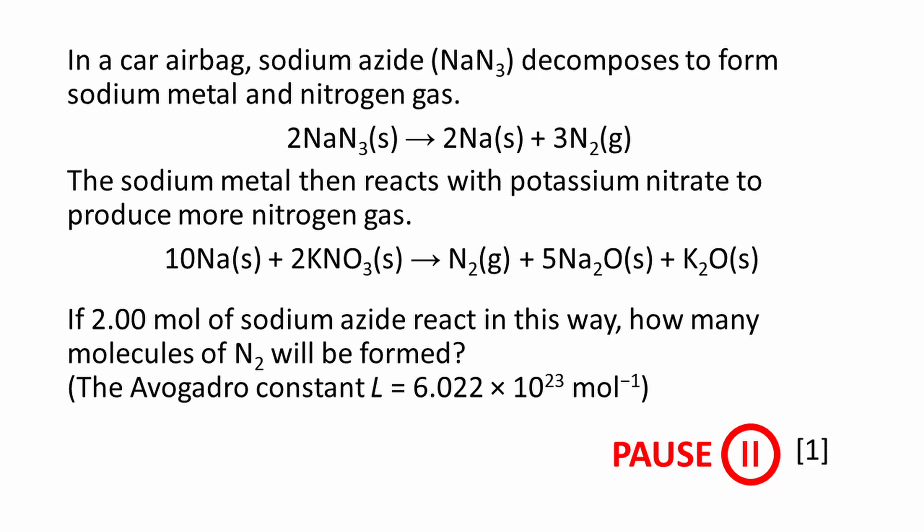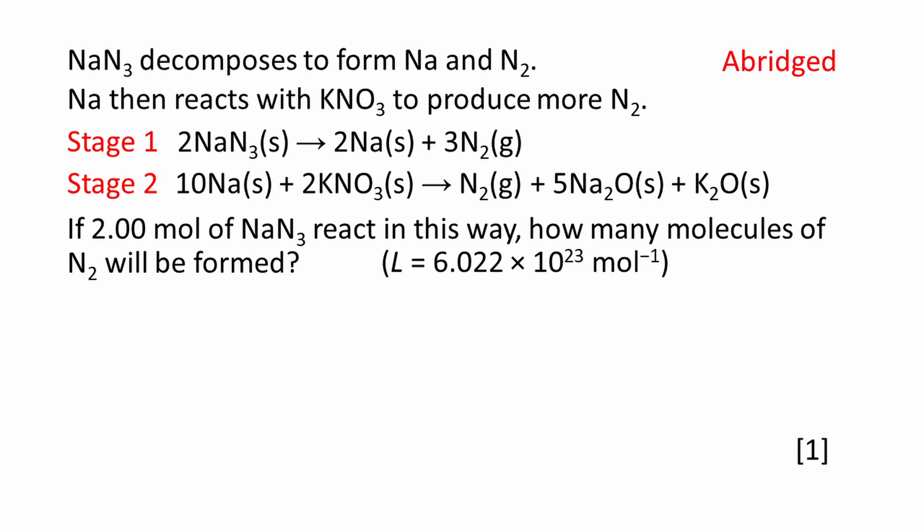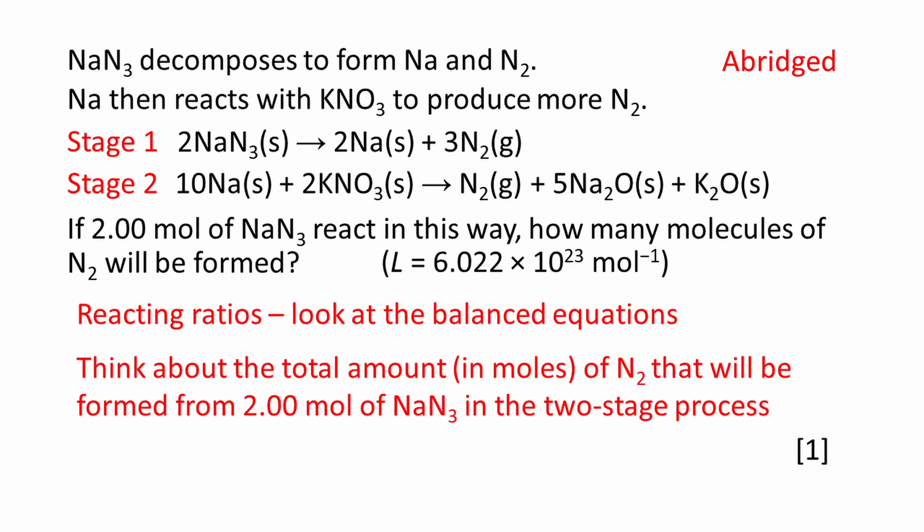This was a multiple choice question, but I haven't shown the options here to save some space. I've edited the question here, leaving only the essential information. To answer this question, we need to use reacting ratios. These can be found by looking at the balanced equations. We need to think about the total amount of N2 that will be formed from 2.00 mole of NaN3 in the two-stage process.